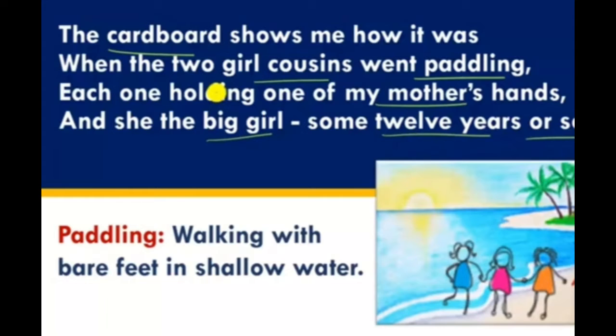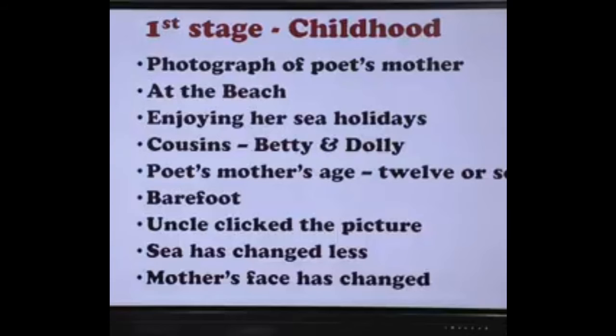Here the word 'paddling' means walking through shallow water with bare feet. Here the mother is being referred to as 'the big girl' — it is written 'and she the big girl, some 12 years or so.' So this big girl is the mother, the poet's mother.